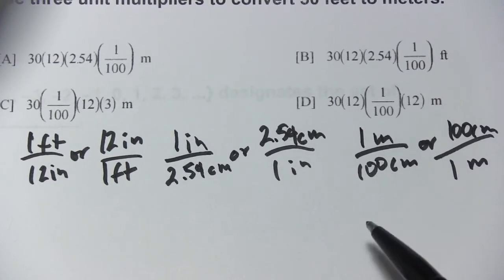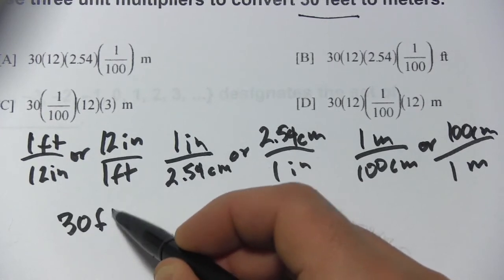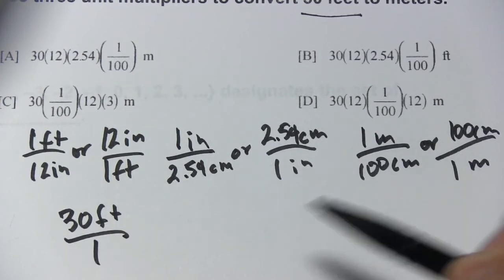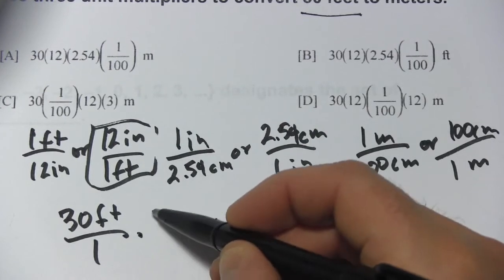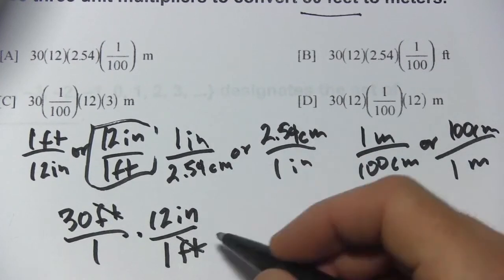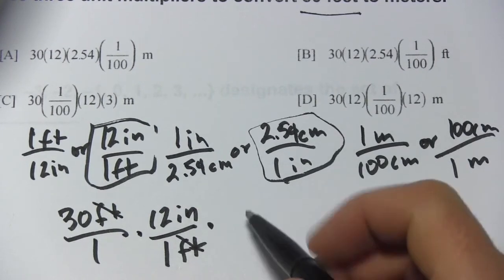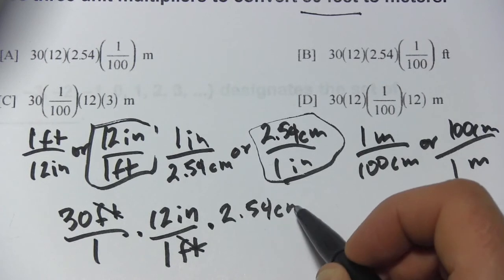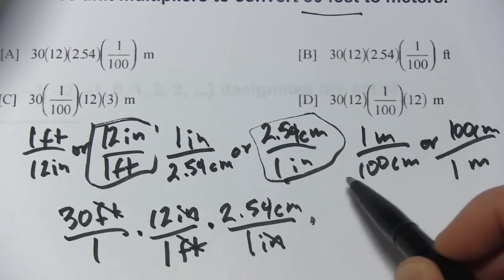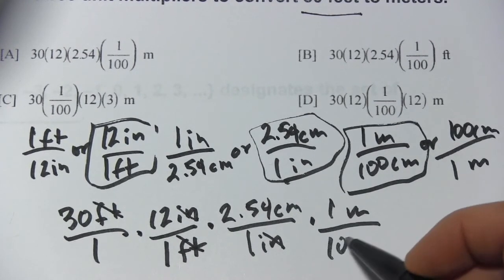We have all our unit multipliers listed out and just have to pick the right ones. We're starting with 30 feet, so I put 30 over 1. I've got feet on top, so I choose the one with feet on the bottom: 12 inches per 1 foot. The feet cancel. Now I'm in inches and want to go to centimeters, so I choose the one with inches on the bottom: 2.54 centimeters per inch. Inches cancel, and I'm in centimeters.